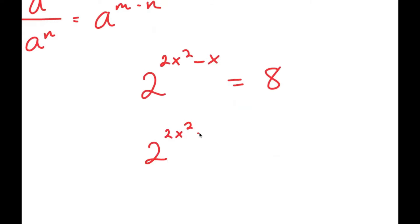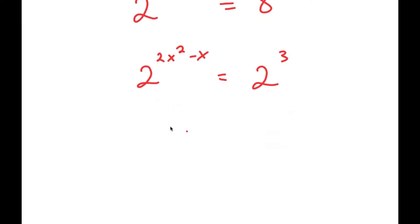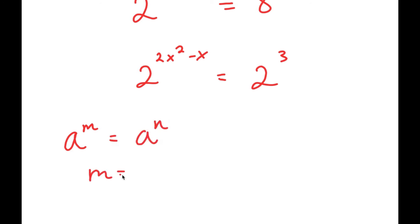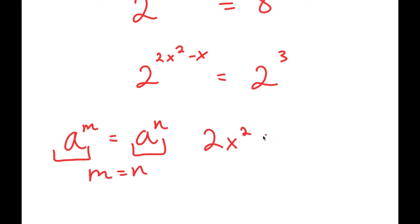Now I'm going to rewrite 8 as 2 to the power of 3. Another property of exponents is that if a to the power of m equals a to the power of n, then m equals n — in other words, if the bases are the same, the exponents are equal. So now I have 2x squared minus x is equal to 3.